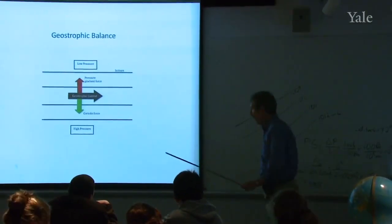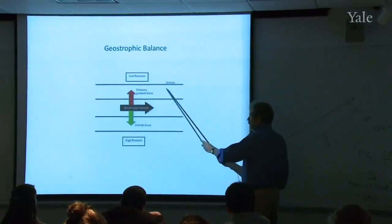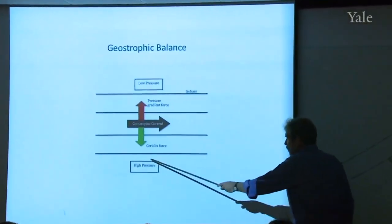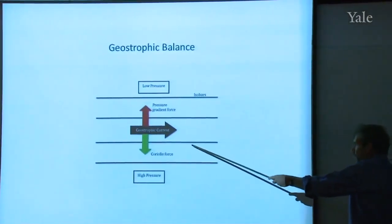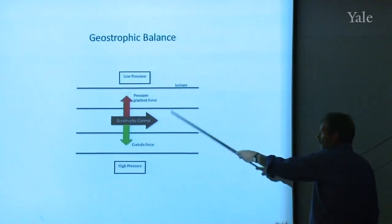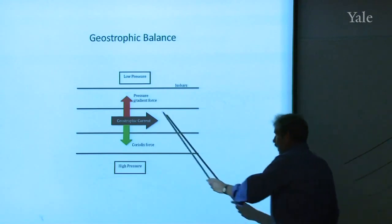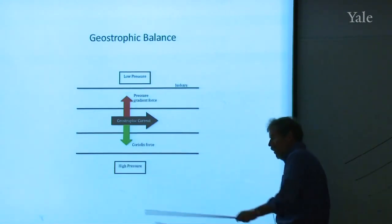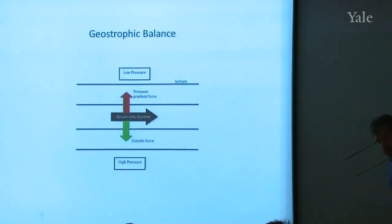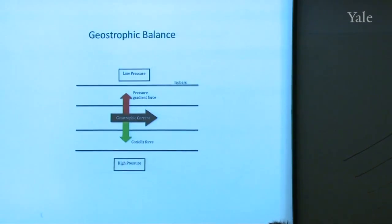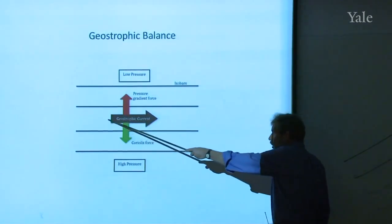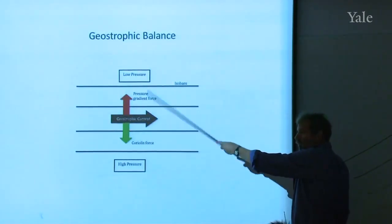These lines of constant pressure are called isobars, and you could label them with a pressure, 1,020, 1,010, 1,990. But those are just lines of constant pressure drawn on a map called isobars. And so you'll notice that in this circumstance, instead of the air blowing from high pressure to low, like you would have expected, because of the Coriolis force, it moves along the isobars, not across them.